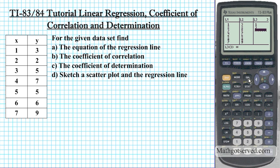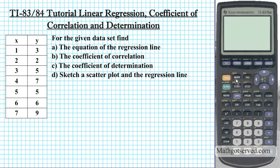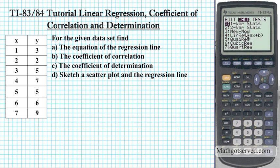I'm going to go ahead and delete those three entries from list 3. Just highlight the cell, press delete, and that removes the element. So we're just focusing on list 1 and list 2. Now that we have the data entered, I'll click back to the home screen. I want the equation of the regression line, so I'll go back to stats. This is the calculate menu, so scroll to the right — calculate.